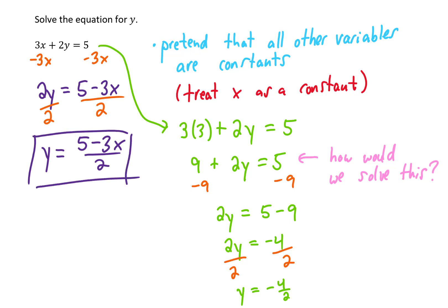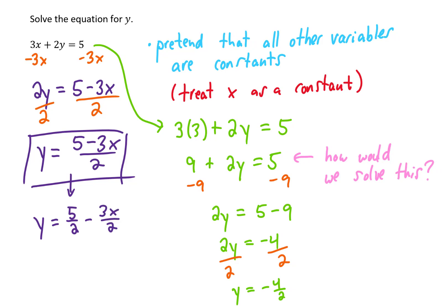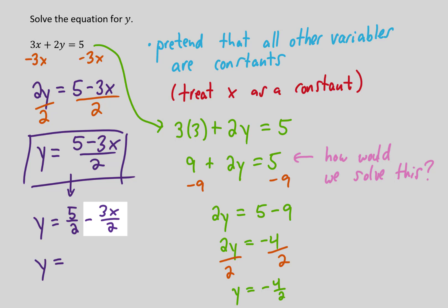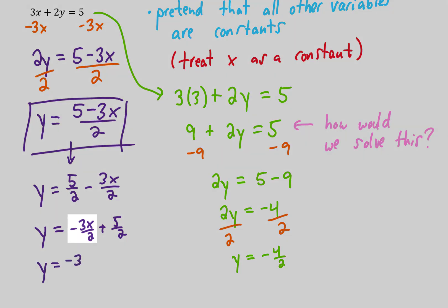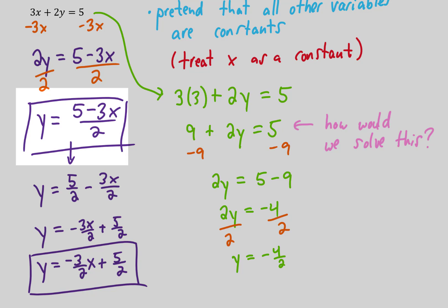That answer is fine for this section, but this formula is an equation for a line, and we typically write it in a different form. So we can divide both the 5 and the 3x by 2, splitting the numerator into two pieces. Since the equation of a line usually has the x-term first, we write it as negative 3x over 2 plus 5 halves, or equivalently negative three-halves times x plus 5 halves.